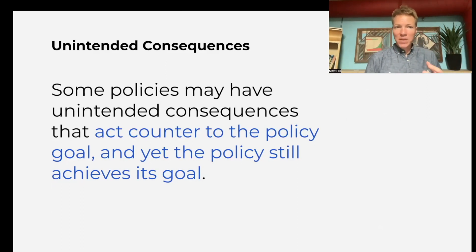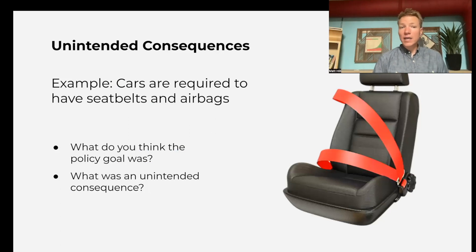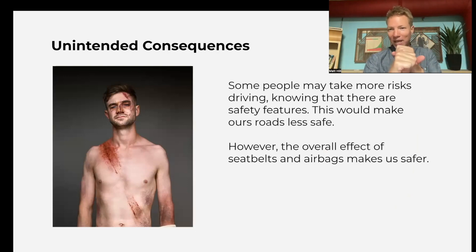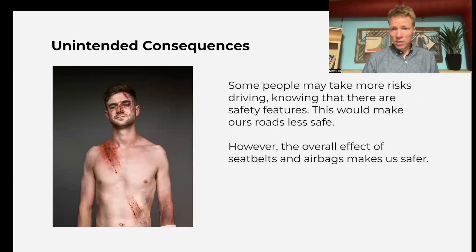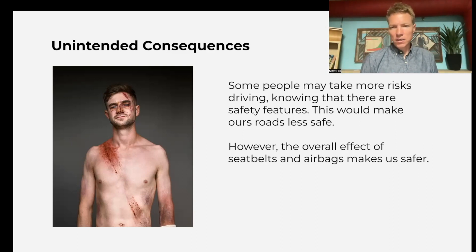Some policies may have unintended consequences with incentives that work to counter the policy, yet the policy still achieves its goal. The example here is seatbelts and airbags in a car — designed to increase safety. The unintended consequence is that people may take more risks knowing their car is super safe. In the extreme example, if there was a spike in your steering wheel, you'd be a very careful driver. With airbags and seatbelts, some people feel safer and take more risks on the road, which lowers safety. However, given how safe the airbags and seatbelts are, it probably overcomes that unintended consequence, and ultimately we are safer.